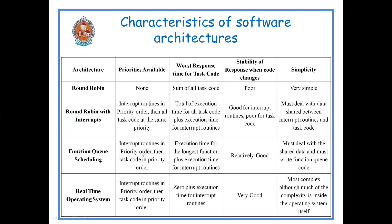In function queue scheduling, the interrupt routines are given priority order and the task code are also given priority order. Depending upon the importance of that particular routine or task, priorities are assigned in the case of function queue scheduling.